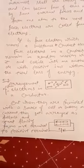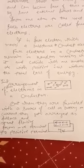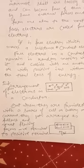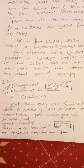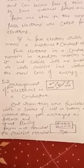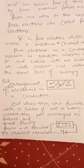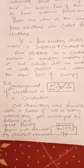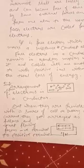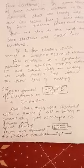You can notice that they move in random directions and may collide with each other without any loss of energy. But when they are provided with a source of potential difference — a cell, battery, or electric current — they get aligned in a certain direction, flowing from the negative terminal to the positive terminal.